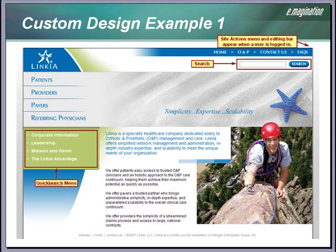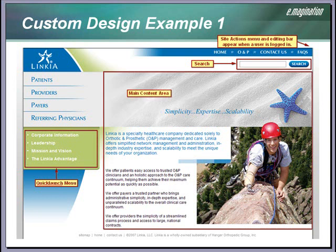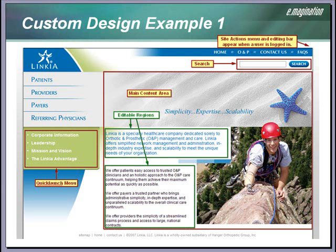Here is the search feature in MOSS, which we were able to style to match the site. Here is the main content area where we used a custom page layout. The home page and interior pages use different custom layouts. Here are the editable regions in the page. For this site, we did not use the navigation control for the root navigation. We simply hard-coded these four links in the master page.